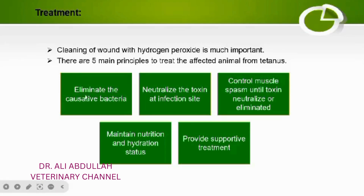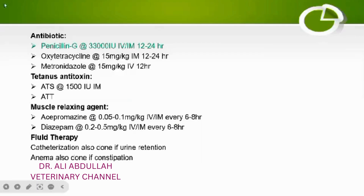There are five principles of tetanus treatment. The first principle is to eliminate the causative agent using antibiotics. The antibiotic of choice is Penicillin G at a dose rate of 33,000 international units, given intravenously or intramuscularly, repeated every 12 to 24 hours. Alternative antibiotics for tetanus cases are oxytetracycline and metronidazole.